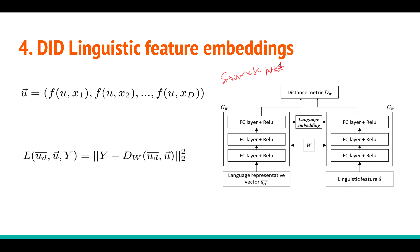The CMS network has two streams sharing the same weights W — essentially a single network applied to two inputs. One stream takes a language representation vector u_d_bar, and the other stream takes u. Think of u as an utterance-level linguistic feature vector. u_d_bar is the dialect-level representation vector for dialect d.